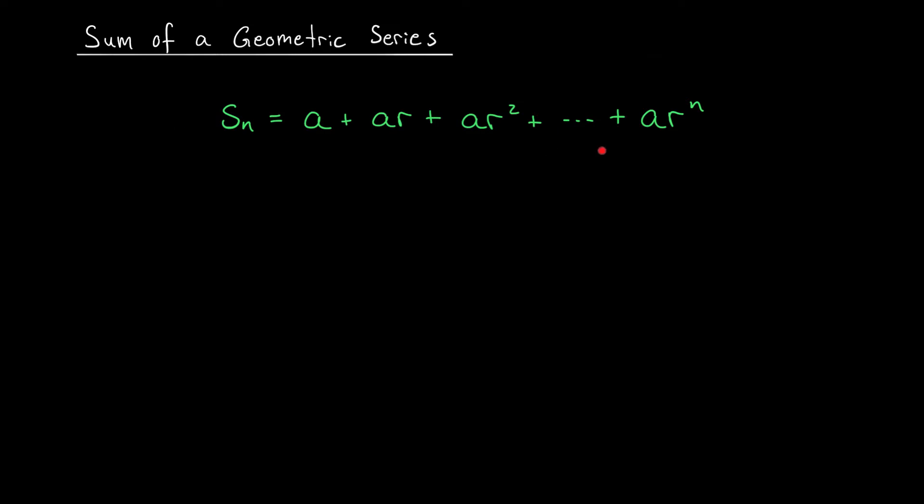We start with the equation of the nth partial sum that you see here. a plus ar plus ar squared all the way up to ar to the n. Then we multiply both sides of this equation by r. When we do this, something magical happens. Every term in our partial sum is going to take one step to the right. a becomes ar, ar becomes ar squared, and so on.